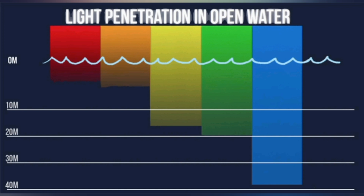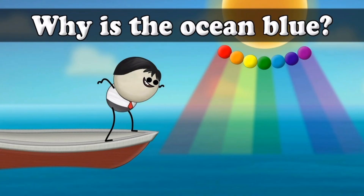In deeper waters, however, not all wavelengths of light can fully penetrate the liquid as there are too many water molecules in the way of the photons. The water molecules absorb all the red wavelengths from the light, making it reflect blue. This is also why shallow waters appear less blue or lighter blue than deeper ones — less absorption means less reflection.